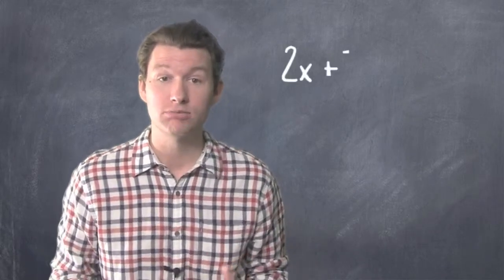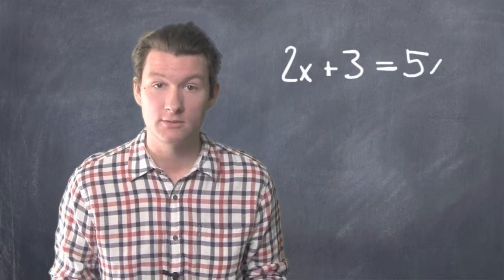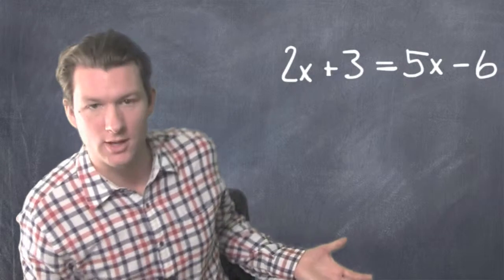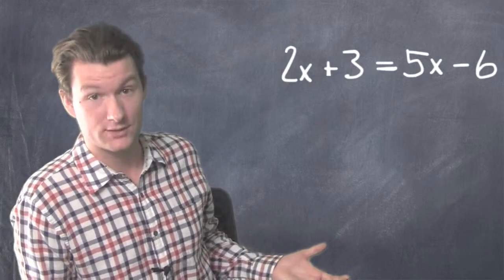Let's say we had 2x plus 3 equals 5x minus 6. Alright, look at this. Exactly what I'm talking about. We have x's on both sides, we have numbers on both sides.